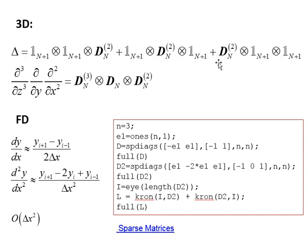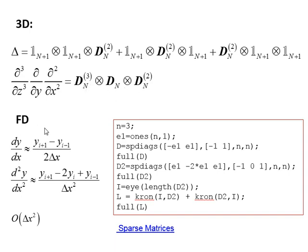By this operation we can take the Laplace operator in 3D. For example, a differential operator can be written using tensor products, where the first term — the third derivative with respect to Z — uses D to the power 3 in the corresponding Kronecker position.